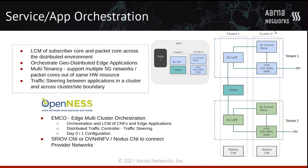SR-IOV CNI and OVN for NFV (Nodus CNI) are used to connect provider networks and extend network connectivity across different clusters. This can also be done by service mesh, but the demo showcases network abstraction making use of multiple network constructs in the Kubernetes CNI space.